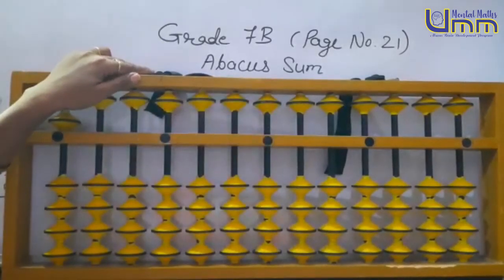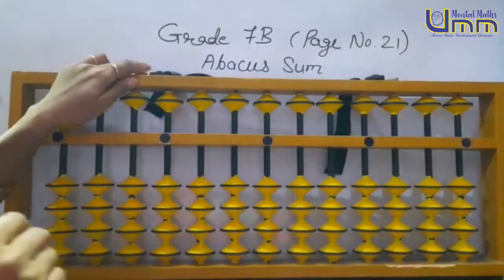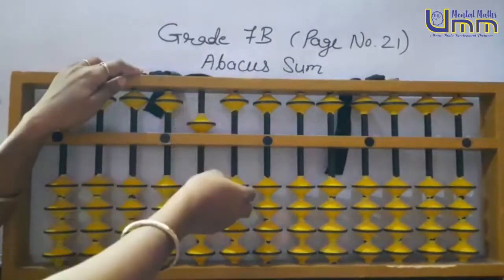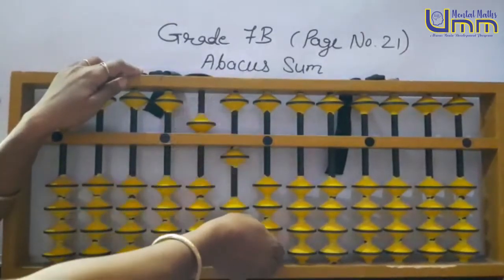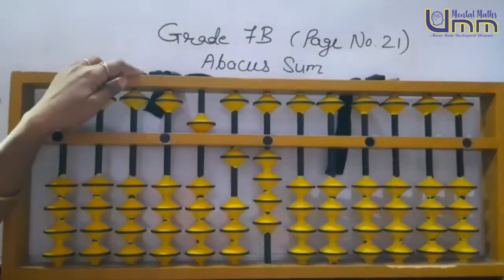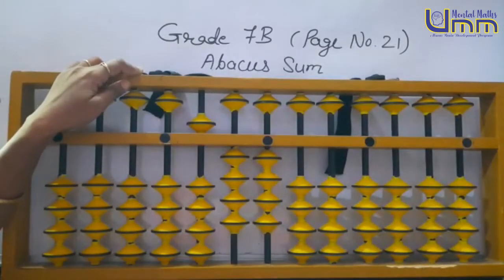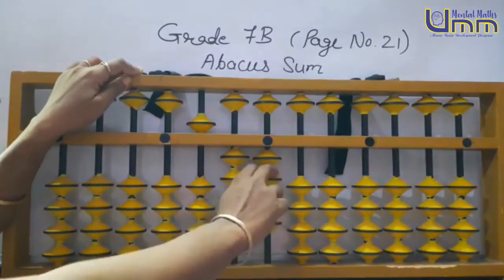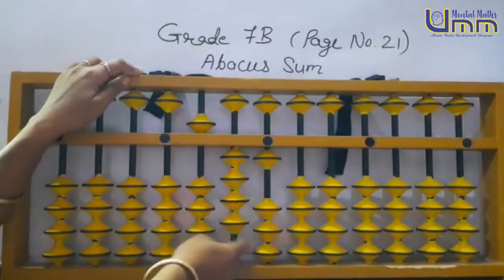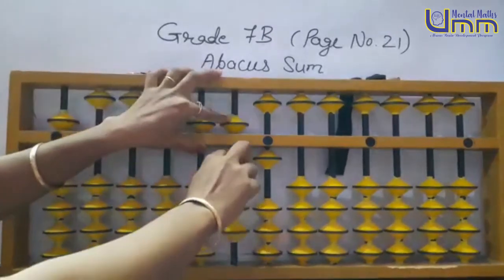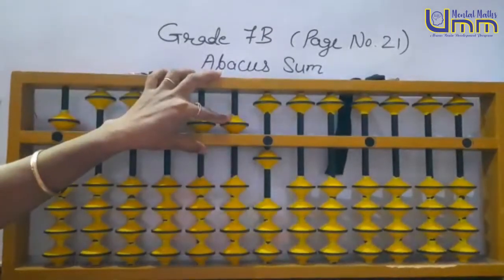Second sum. 500 times 14: 5, 1, 4. Then 37: 30 directly, 7 minus 3 plus 10.